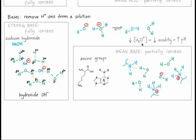Either way, the effect of amino groups is to lower the hydronium ion concentration, and thus increase pH. Like weak acids, weak bases only partially ionize. Only some amino groups pick up a hydrogen ion to form NH3+, while others stay as NH2.